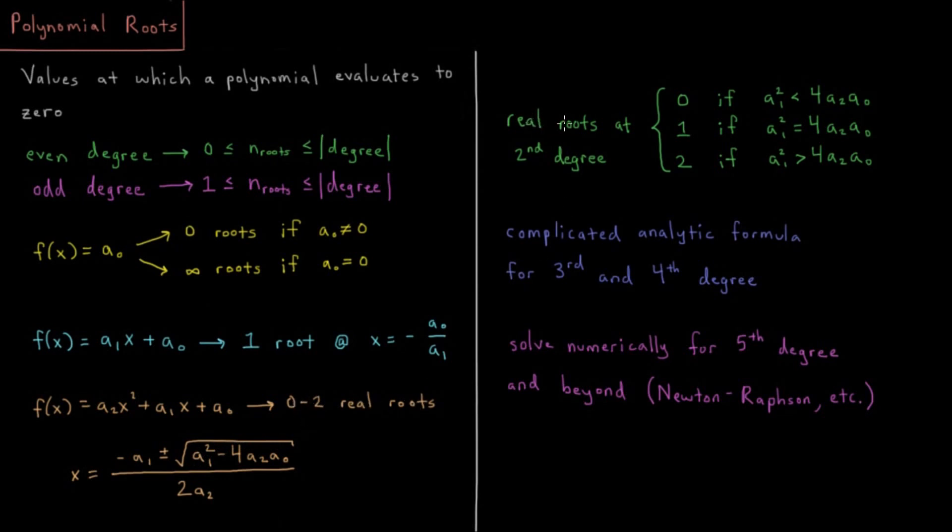So the number of real roots that we get for a second order polynomial, the degree is 2, so we can get either 0, 1, or 2 for the number of roots. We get 0 if a₁² is less than 4a₂a₀, so in that case the discriminant is negative and both roots are imaginary.